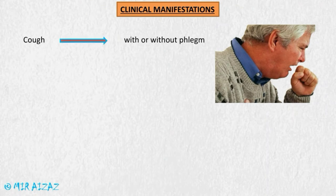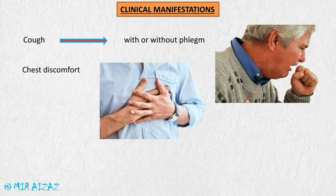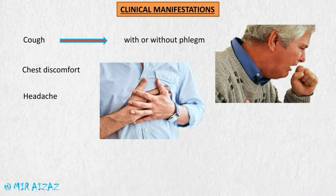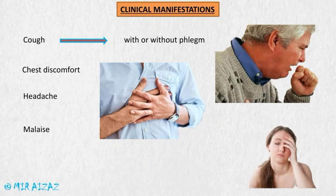The first and most important clinical manifestation in bronchitis is cough, which may or may not produce phlegm. The second is chest discomfort, because the patient continuously struggles to inhale oxygen-rich air, which is difficult due to inflammation and excess mucus production. There may also be headache, malaise — which is a general feeling of illness — and wheezing, which is a high-pitched whistling sound caused by excess mucus production.